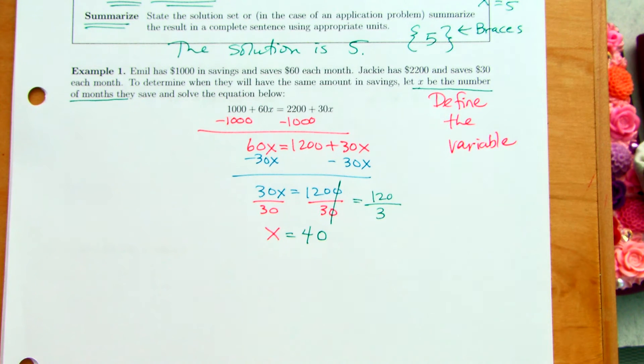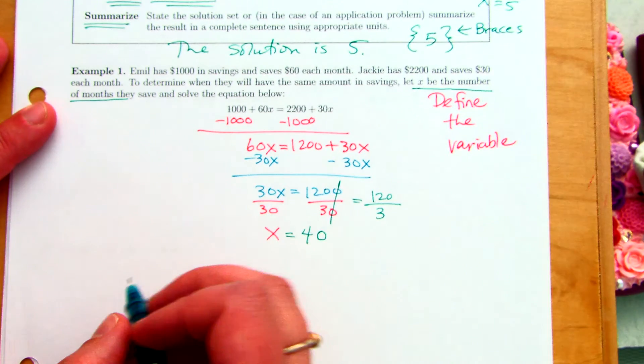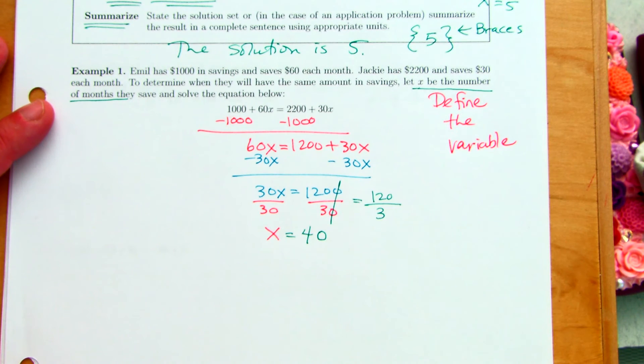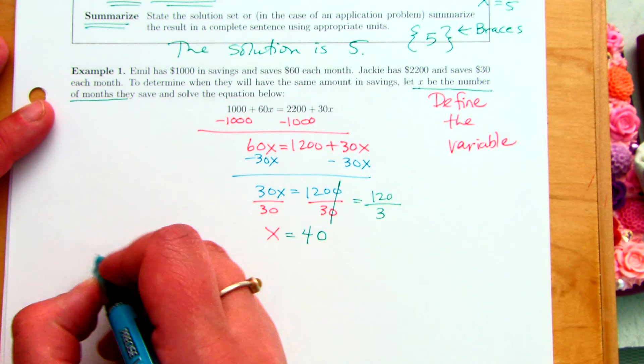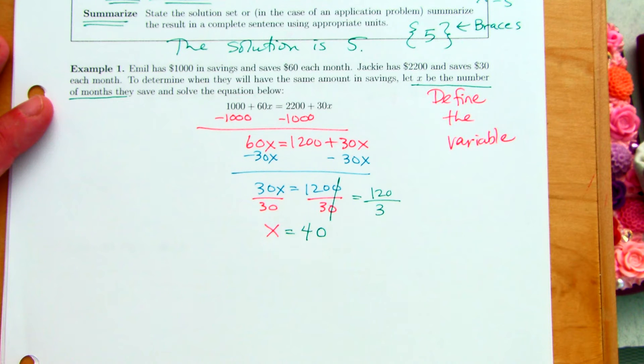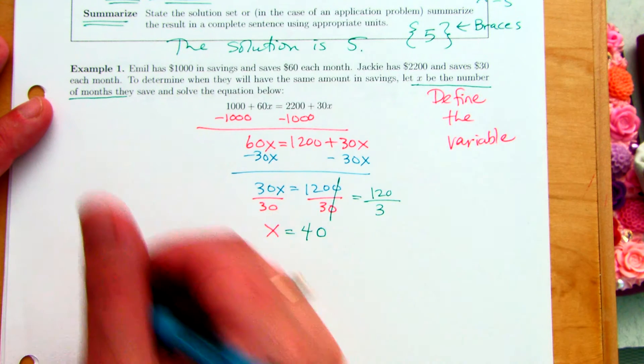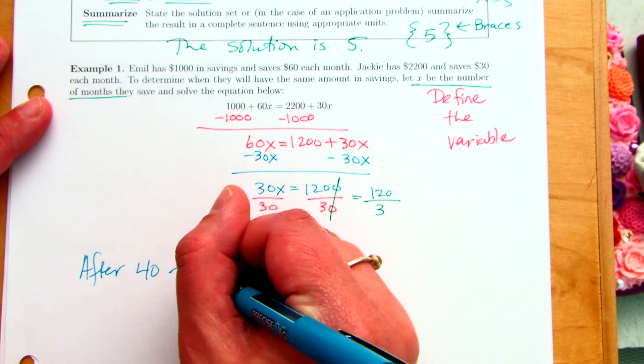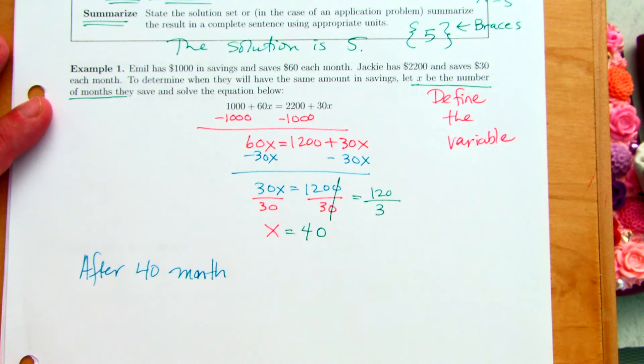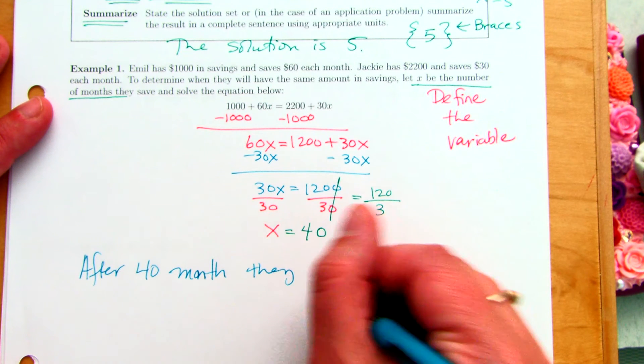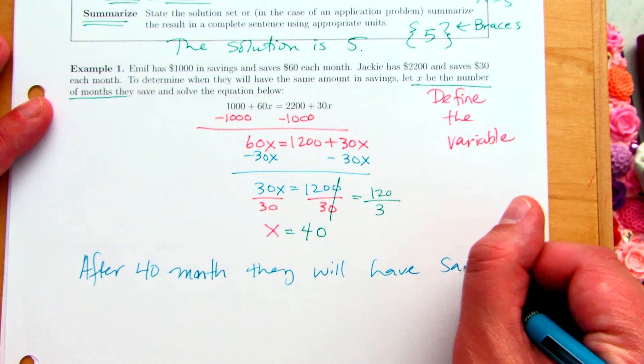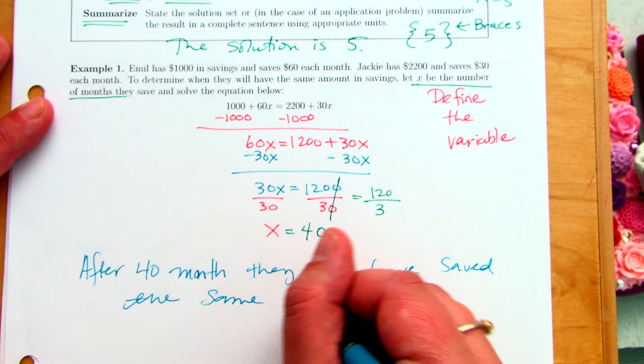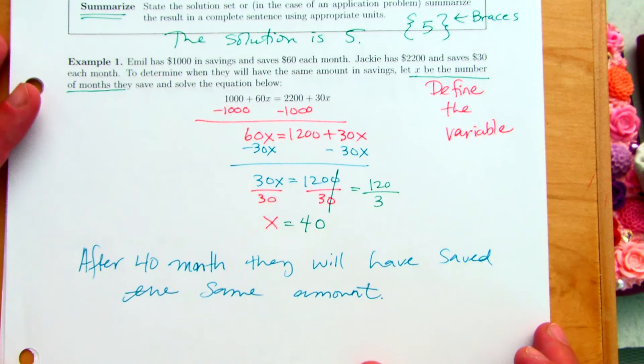Now, a lot of times people will just leave this the answer. It's like, oh, I'm done. But especially with a word problem, we want to have a sentence answer based on the situation. And we also want to check it. What would your sentence answer be? 40. What does the 40 represent? The solution is after 40 months, or I like in month 40. That's more specific. In month 40, they will have saved the same amount.